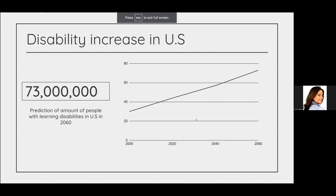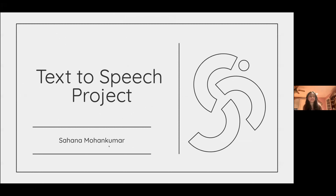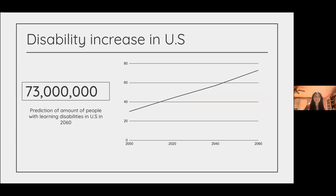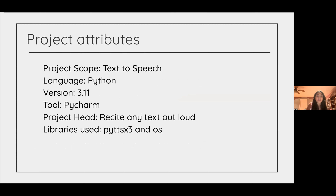Yes, we see your screen. So this is my project — it's a text-to-speech. Text-to-speech is an artificial intelligence program that analyzes written text to generate audio outputs that sound like human speech. It has a wide range of applications and is mostly used for assistive technology for people with visual or learning disabilities. Another large issue in the workplace is language barriers, but with text-to-speech people can communicate more easily with others. It can also help unemployment rates, since due to the pandemic there have been high unemployment rates of people with disabilities.